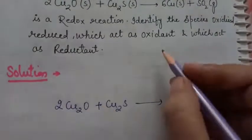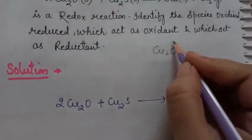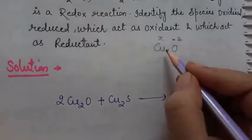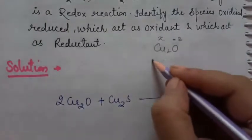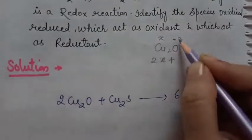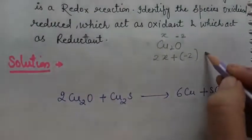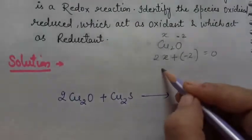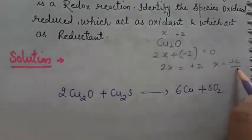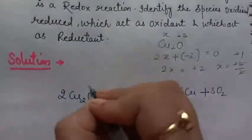Let us find the oxidation state of Cu in Cu₂O. We consider Cu's oxidation state as x. The charge of oxygen is minus 2, and we already know this. So for Cu₂O: 2x + (−2) = 0, since it is a neutral molecule. Therefore 2x = 2, and x = +1. So copper is in the +1 oxidation state in Cu₂O.